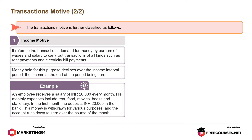For example, an employee receives a salary of Rs. 20,000 every month. His monthly expenses include rent, food, movies, books, and stationery. In the first month, he deposits Rs. 20,000 in the bank. The money is withdrawn for various purposes, and the account runs down to zero over the course of the month.